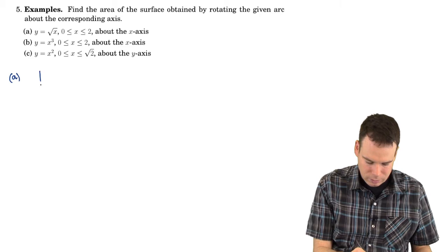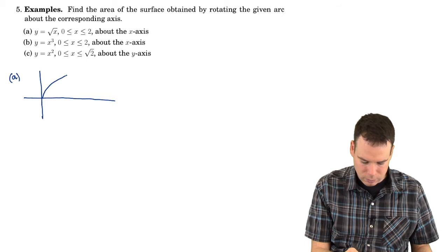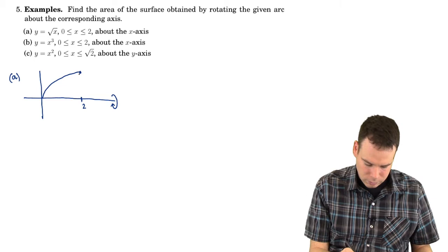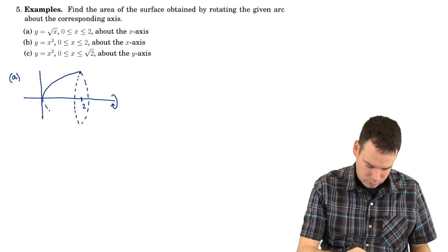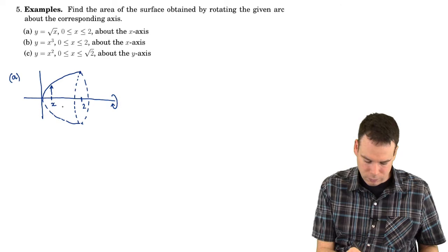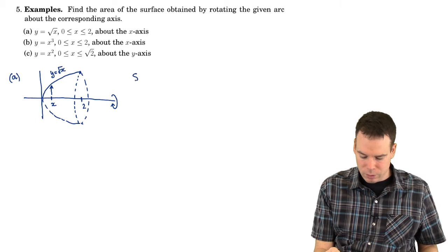In this first example we are looking at y equals the square root of x on the interval from 0 to 2. We're ending up here at 2 and we're going to revolve around the x-axis. So there's our curve, here's the resulting object. We're going to integrate along the x-axis and the radius at an arbitrary x value is just given by the function — the square root of x.